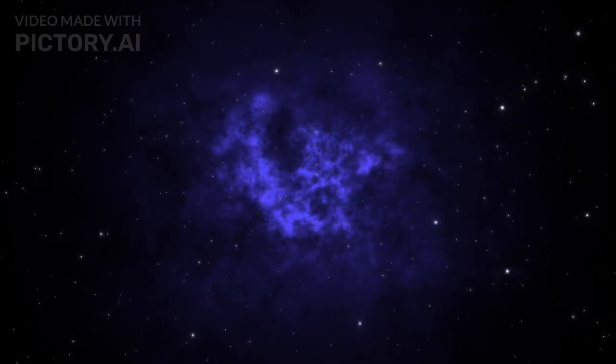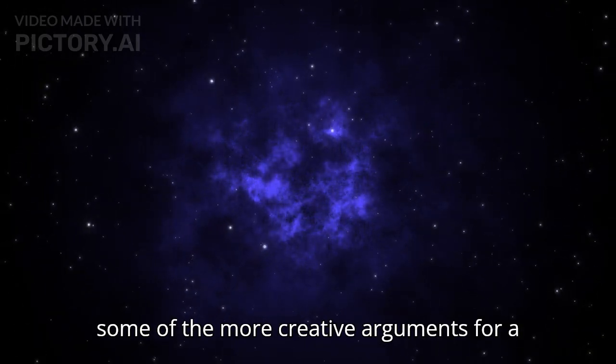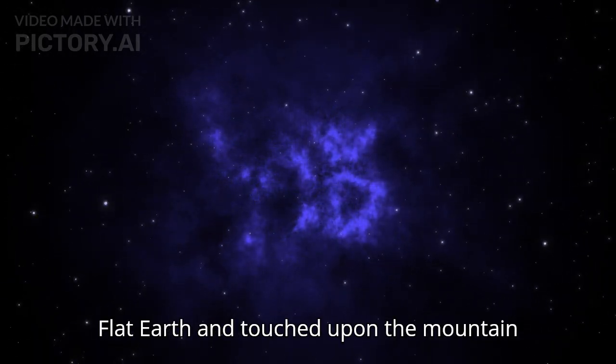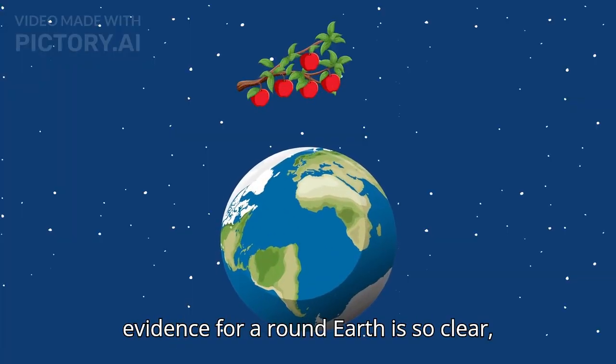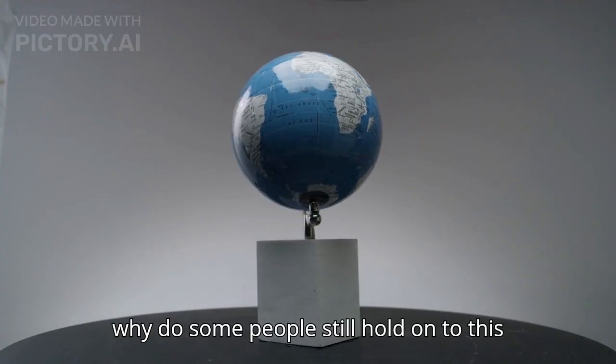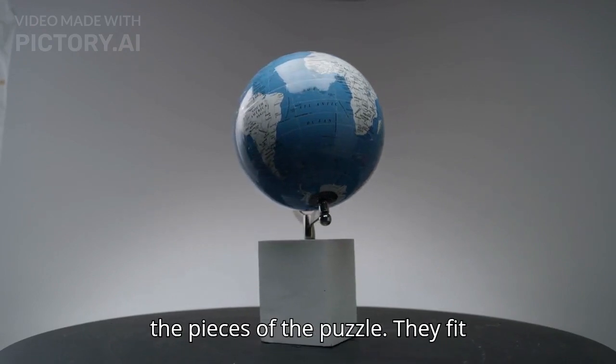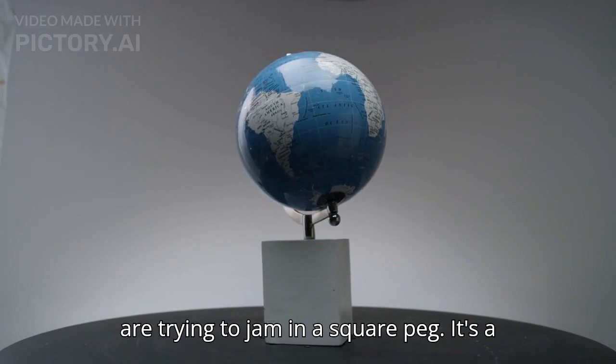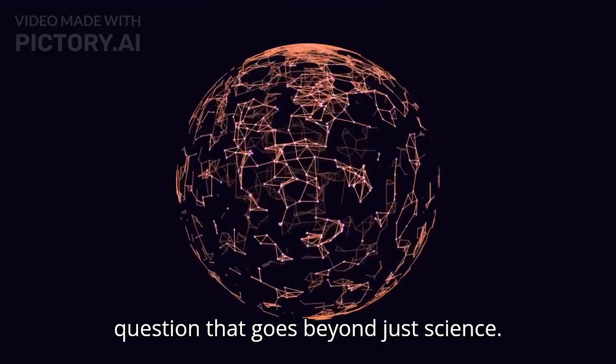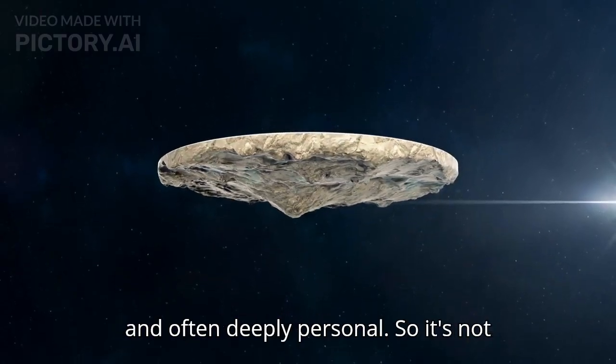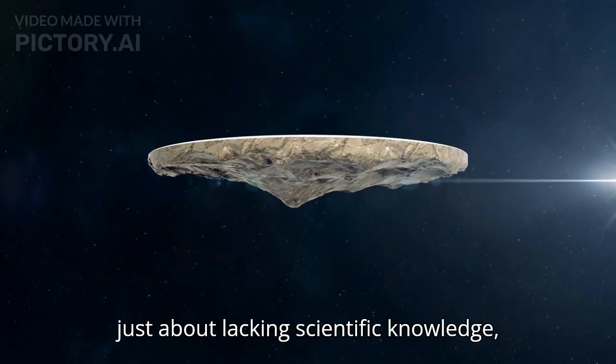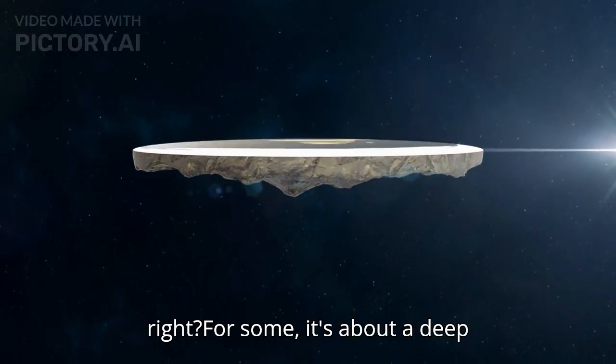Welcome back to our deep dive into flat earth theory. In part one we had a blast debunking some of the more creative arguments, but now I'm curious: if the evidence for a round earth is so clear, why do some people still hold on to this flat earth idea? It's a question that goes beyond just science. The reasons people believe in conspiracy theories like the flat earth are complex and often deeply personal.